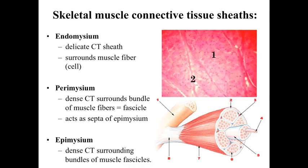The first two lectures focused primarily on skeletal muscle. One thing we need to do to finish up our view of skeletal muscle is to take a look at the connective tissue sheaths associated with it. The skeletal muscle connective tissue sheaths closely parallel what we saw with the connective tissue sheaths of a peripheral nerve.